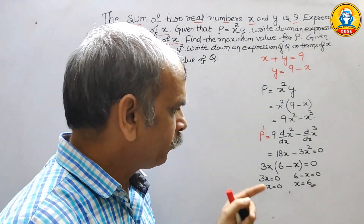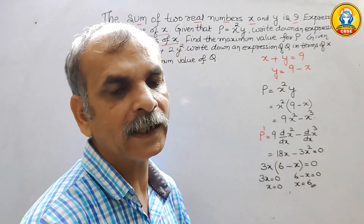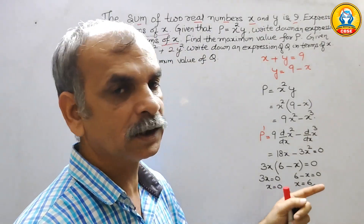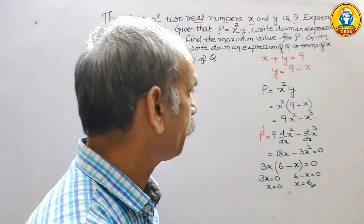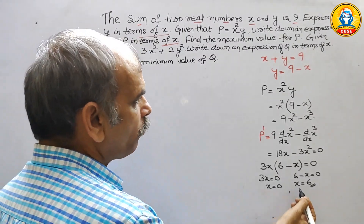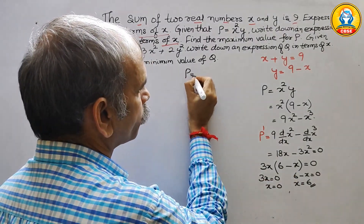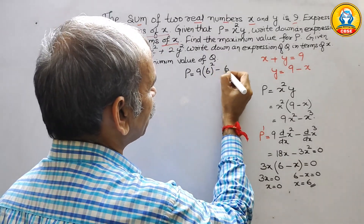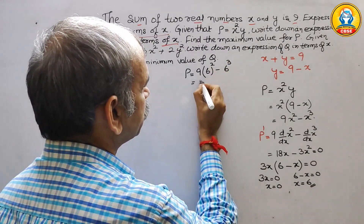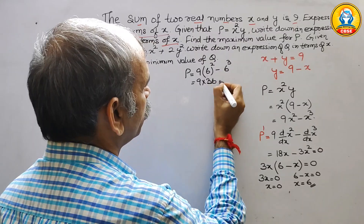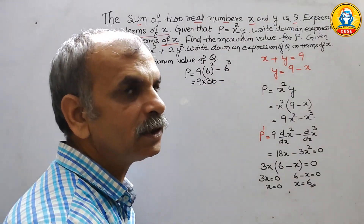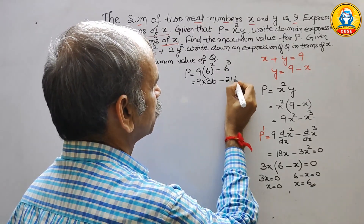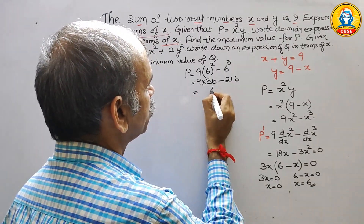If we substitute x equals 0 we get 0, so that is a minimum value. We substitute x equals 6: p equals 9 into 6 squared minus 6 cubed. That is 9 into 36 minus 216, which is 324 minus 216.